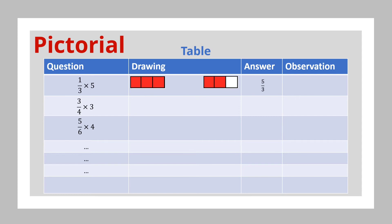In your observation column, the child should observe that we had five thirds from multiplying one times five. This can be prompted so that the child will be able to observe the pattern.